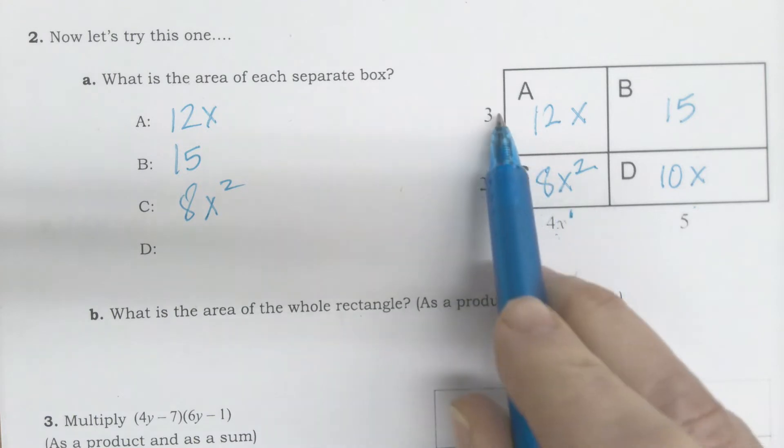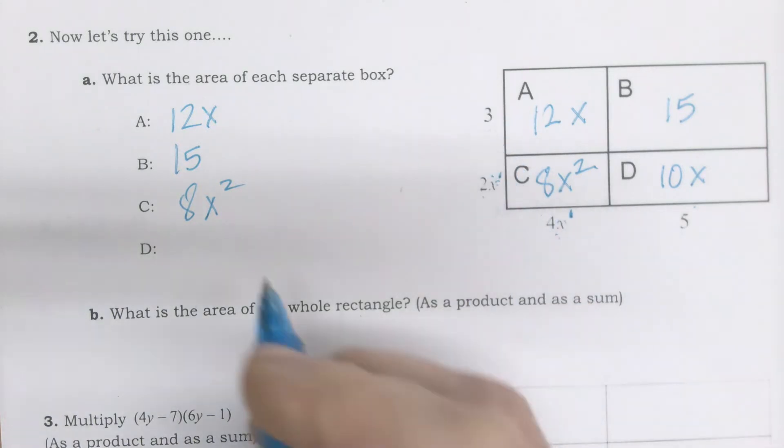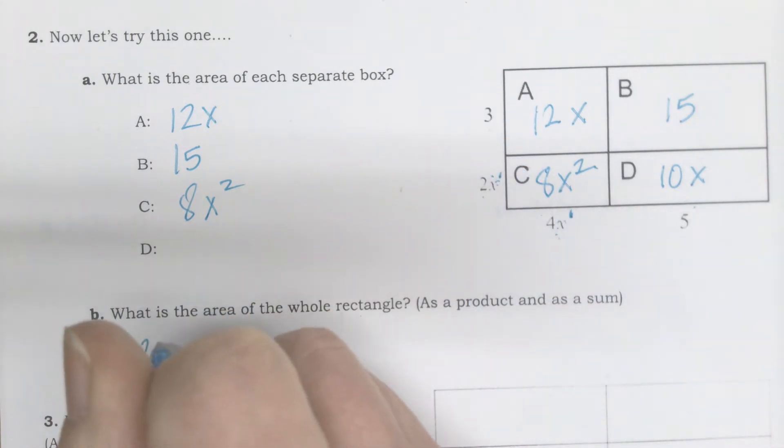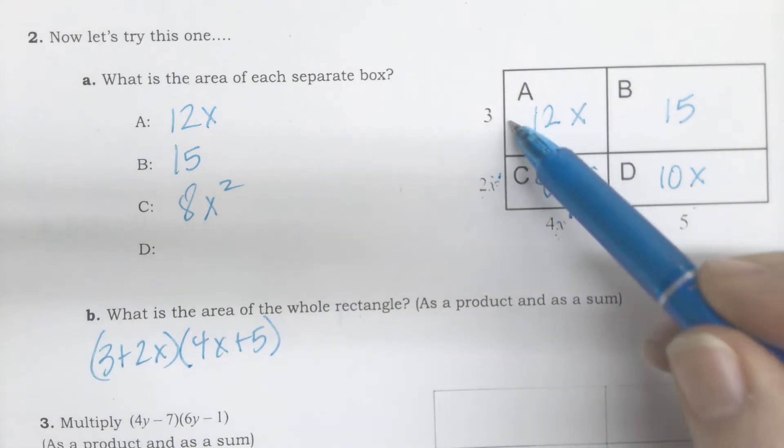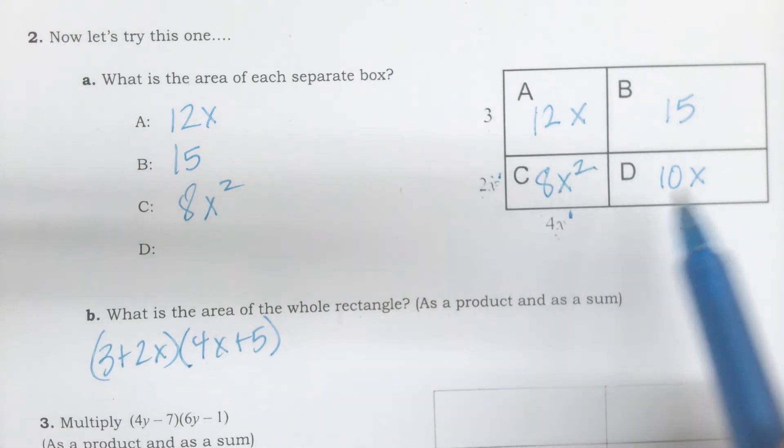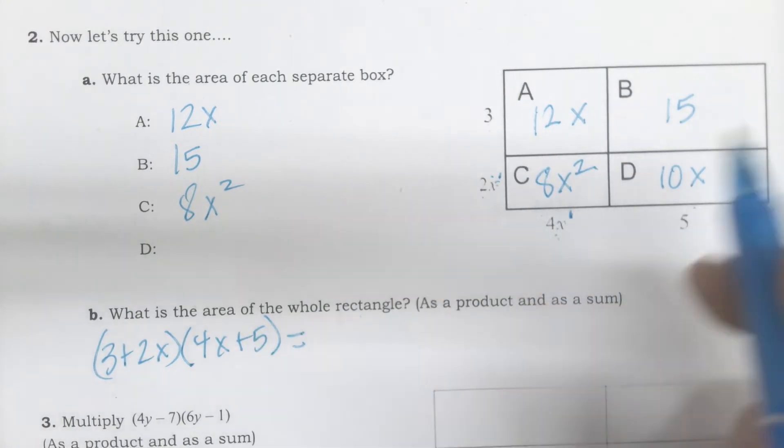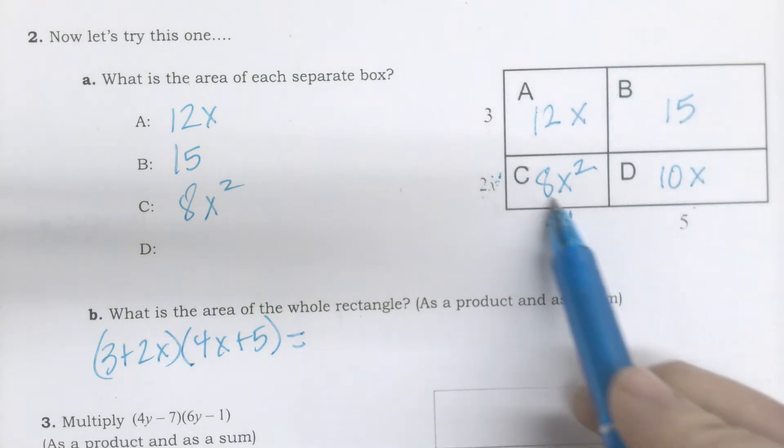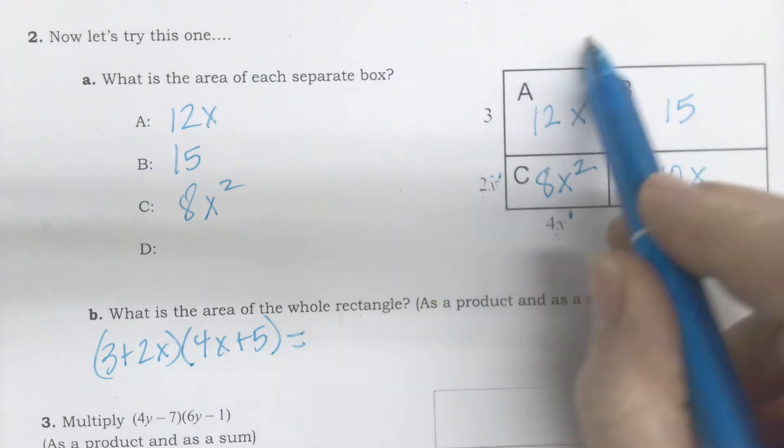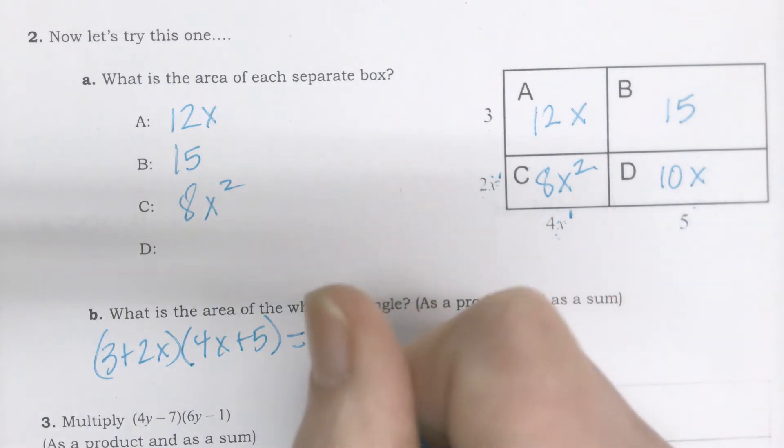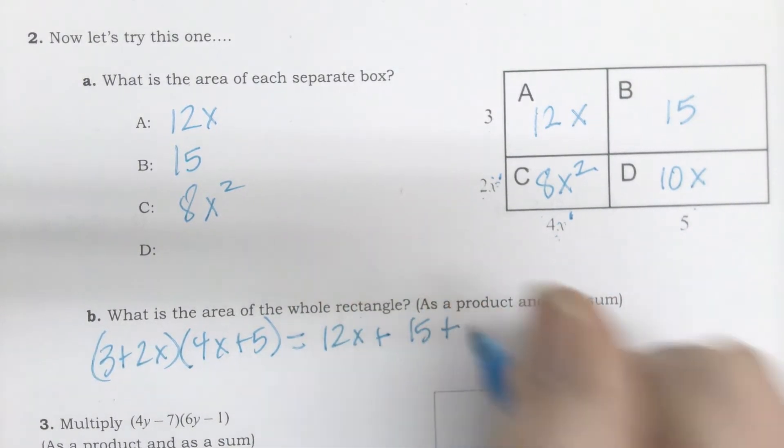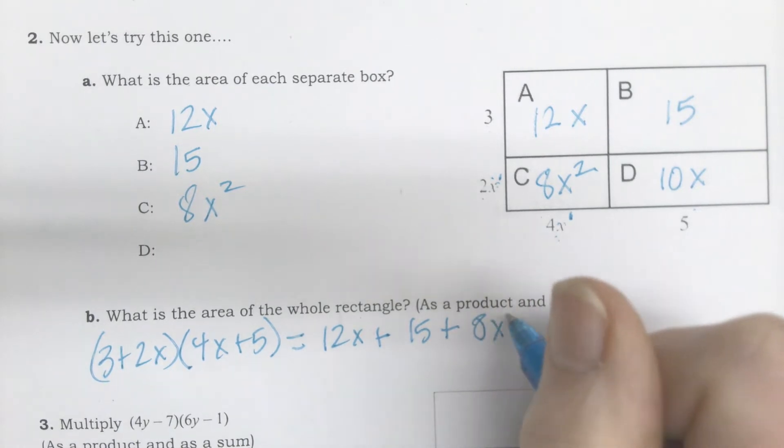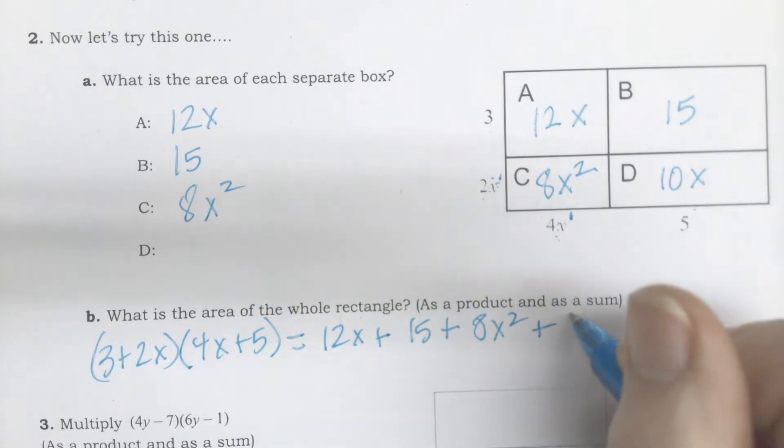So what is the area of the whole rectangle? As a product, I would write this as 3 plus 2x times 4x plus 5, equals the sum of all of these added together.